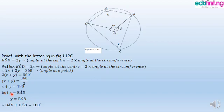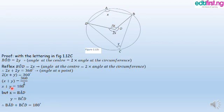Now, X equals angle BAD — this is X, which is this angle here. And Y equals angle BCD — this is Y, which is this angle here. Therefore, angle BAD plus angle BCD equals 180 degrees, which is X plus Y equals 180 degrees. This completes the proof.